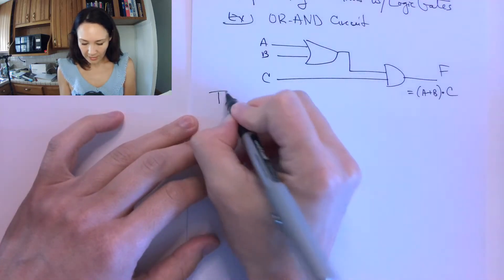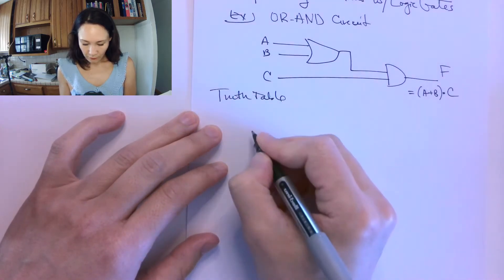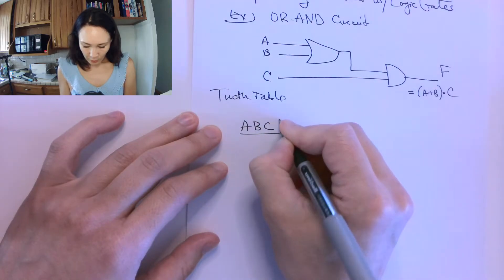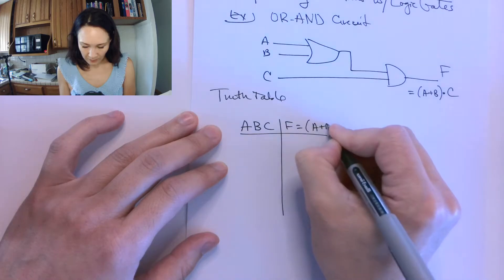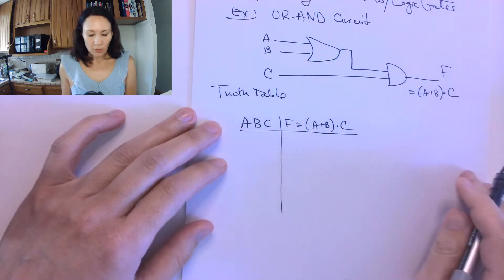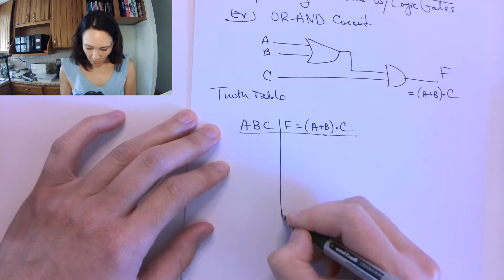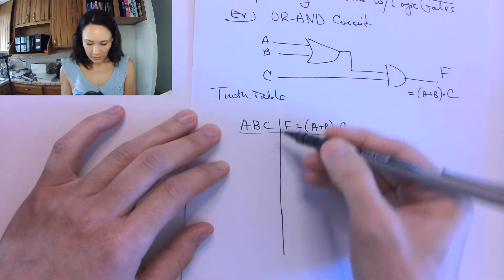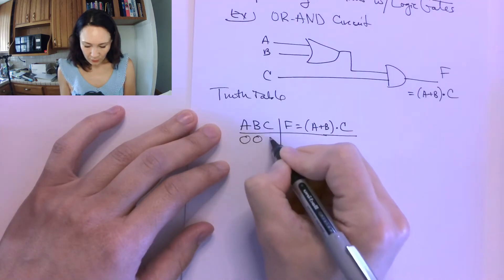Let's look at the truth table and see how it's different. For our truth table, our inputs are now A, B, and C, and our output is F, which is equal to A or B and C. Let's go through the combinations here. In order to represent all possible combinations of inputs, we can just count in binary. But now we have three bits.